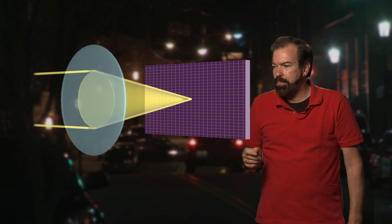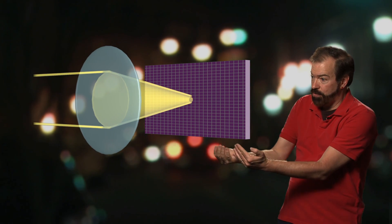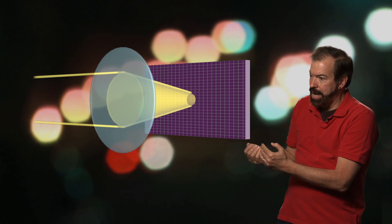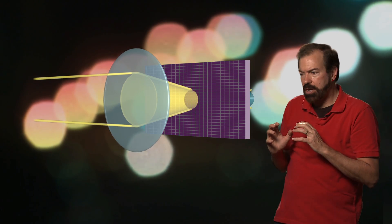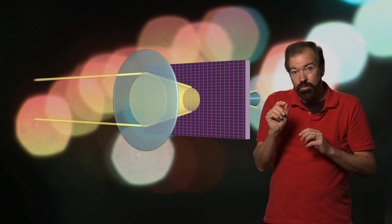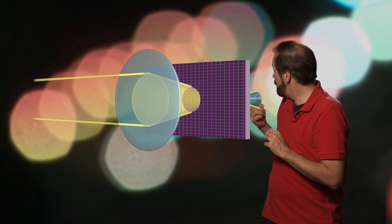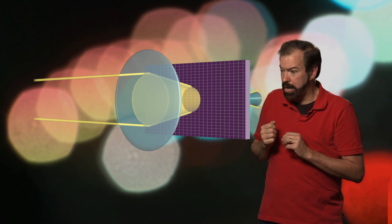But watch what happens as we rack through the focus. The point of convergence moves off the focal plane and we see a larger slice of the cone. The dot grows into a circle, very much like the street lights are doing behind me right now.